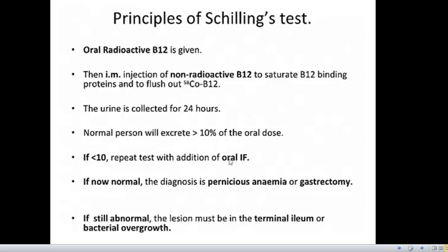If the result is abnormal, it will show less than 10%. We then repeat the test with the addition of oral intrinsic factor. If after this the test becomes normal, then the diagnosis is pernicious anemia. If still abnormal, then the lesion must be in the terminal ileum or due to bacterial overgrowth.